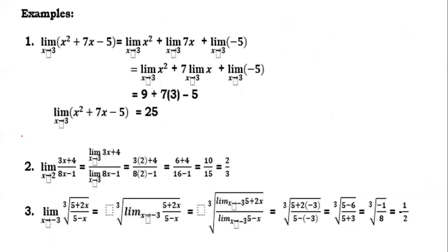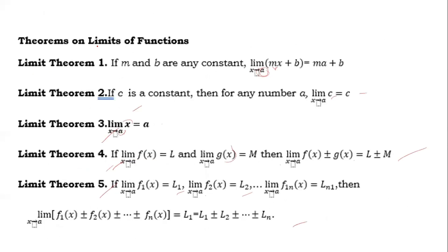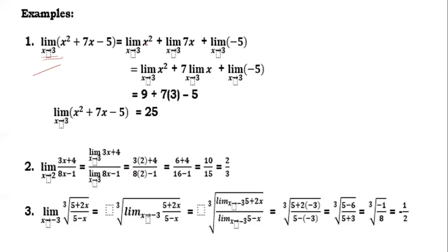Now for the examples, applying all the theorems on limits. Example one: the limit of x squared plus 7x minus 5 as x approaches 3. We distribute the limits: the limit of x² as x approaches 3, plus the limit of 7x as x approaches 3, plus the limit of negative 5 as x approaches 3. Then we transfer the constant outside: seven times the limit of x as x approaches 3.